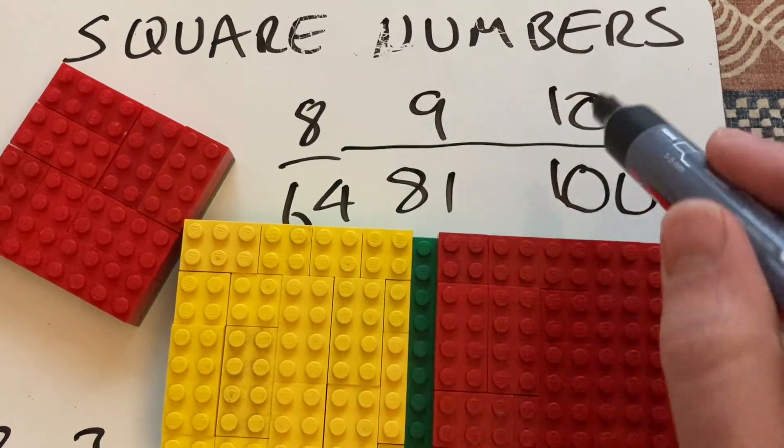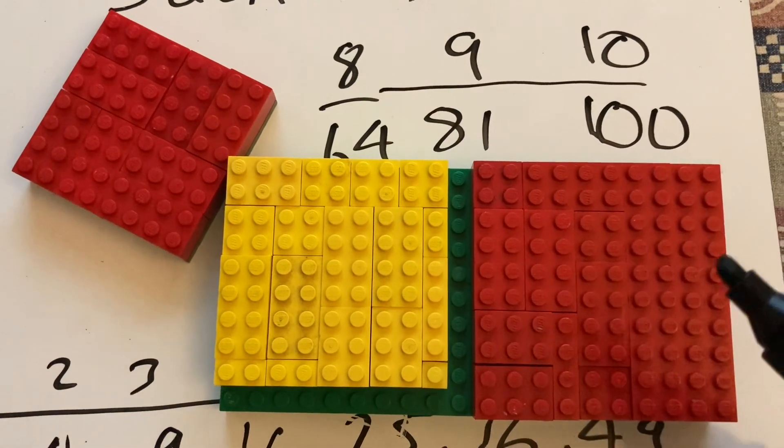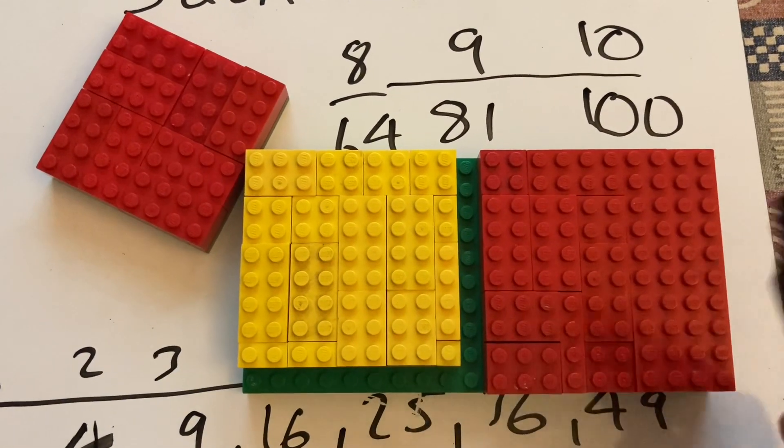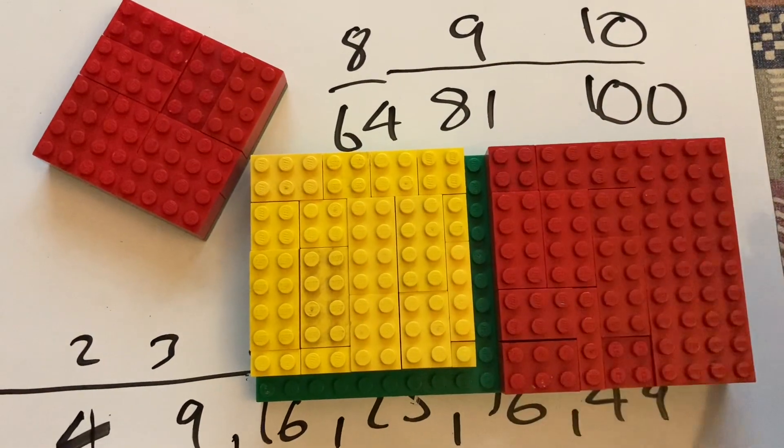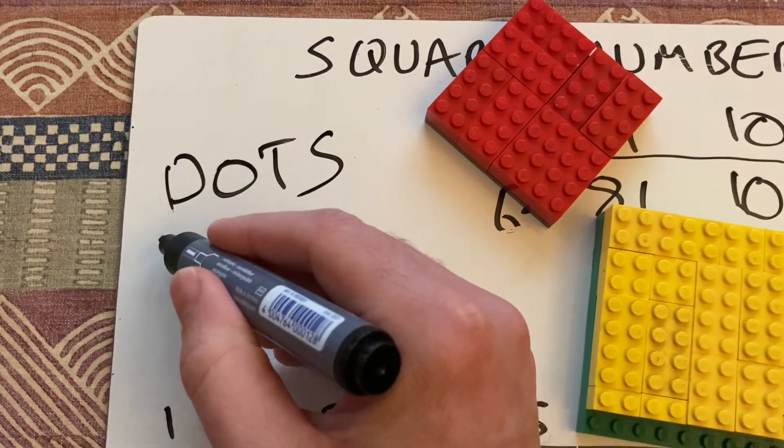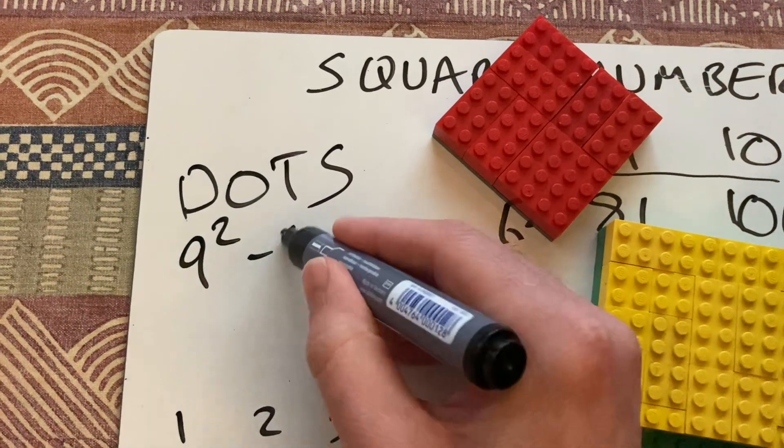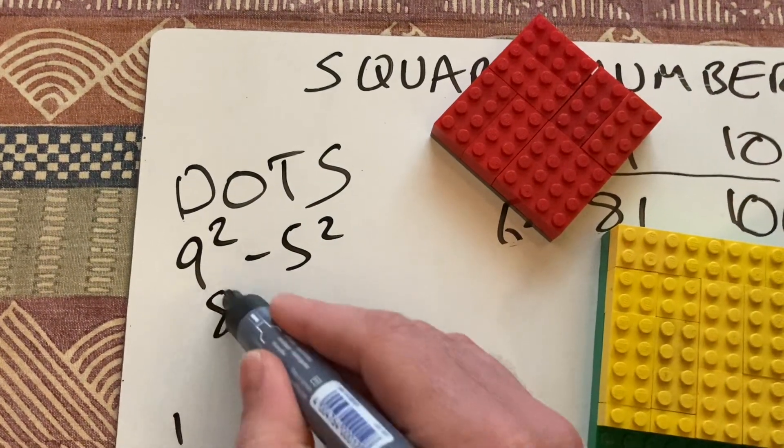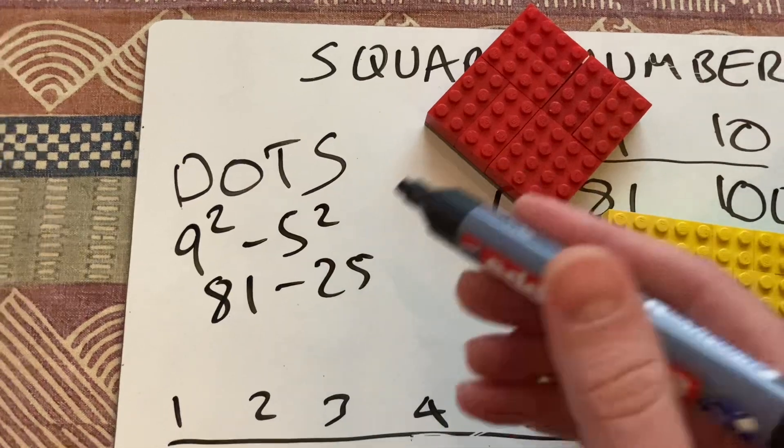Thank you very much. So there we go. That is all these square numbers in LEGO. So you can use them when you're doing a maths question on square numbers. It also comes up in a thing called difference of two squares, where you might look at nine squared minus five squared. So 81 minus 25. Or in algebra.